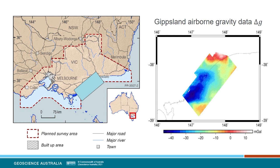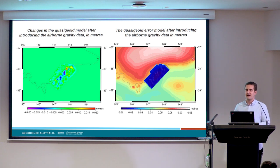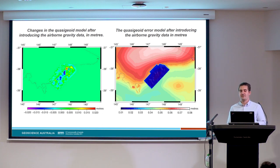Some airborne data have already been collected over the Gippsland Basin, and these have been used as a computational test bed. The gravity anomalies of the airborne data over the region have a range of about 50 milligal — variations in the gravity field of about 0.005%. The data were collected in 2011 by Sander Geophysics Limited on behalf of the state of Victoria, with one-kilometre spaced flight lines and some infill down to 500 metres in the nearshore region. The changes to the geoid model made by including these airborne data are quite small — just a couple of centimetres — but the uncertainty in the geoid model was reduced from 6 to 2 centimetres over the area where the airborne data are available. This level of error is much more closely aligned with users' needs for 5-centimetre accurate positioning.